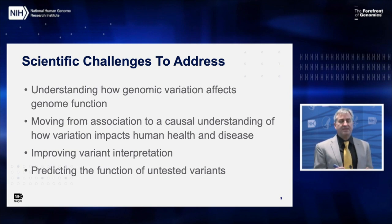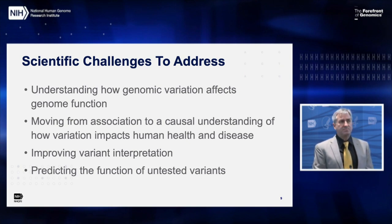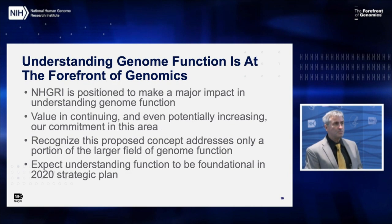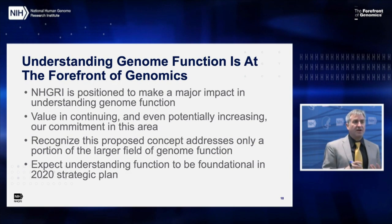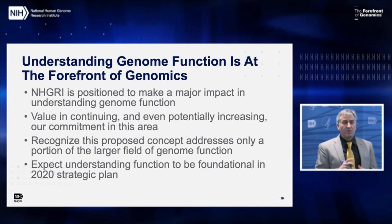To provide some idea of the scope: if you look at the NHGRI GWAS catalog, you'd find something like 70,000 associations from GWAS, few of which have been characterized. If you look at gnomAD3, you'll find some 600 million SNPs and some 100 million structural variants, few if any of which are known to be associated with any phenotypic change or disease. We think this is an area at the forefront of genomics, where NHGRI is positioned to make an important contribution building on our past efforts.